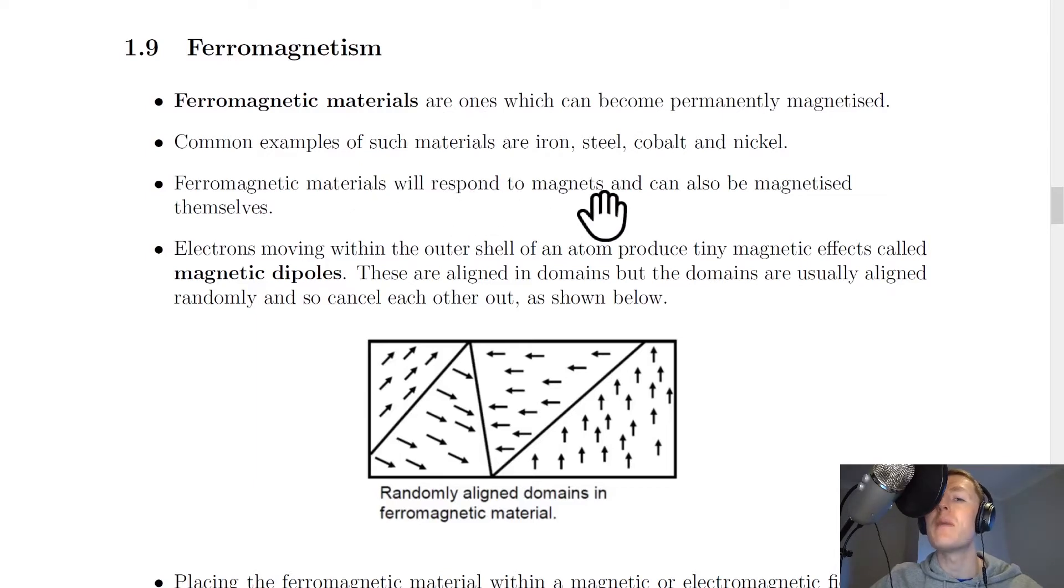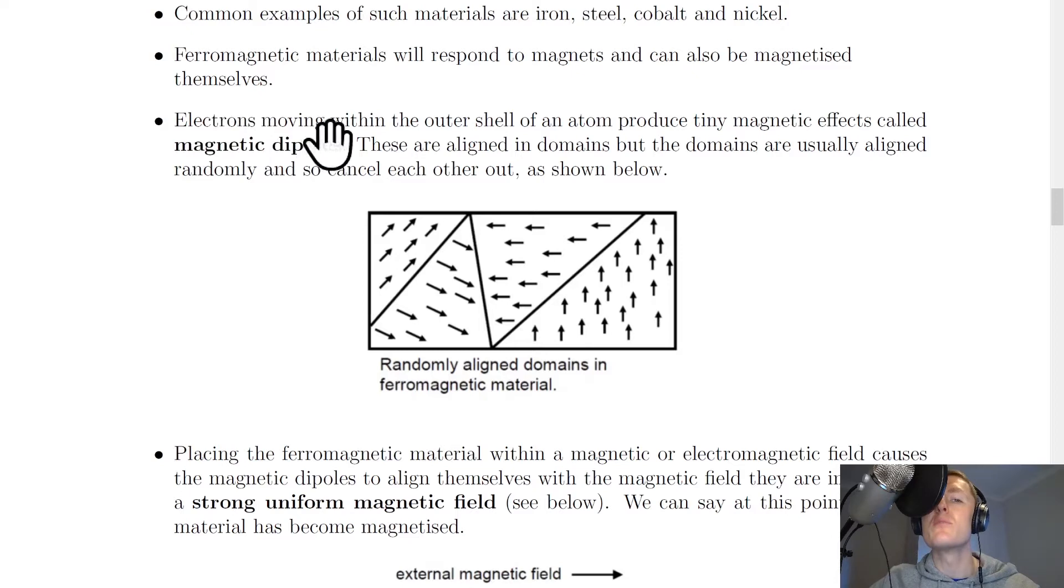Ferromagnetic materials will respond to magnets and can also be magnetised themselves. Electrons moving within the outer shell of an atom produce tiny magnetic effects called magnetic dipoles. These are aligned in domains but the domains are usually aligned randomly and so cancel each other out as shown below.